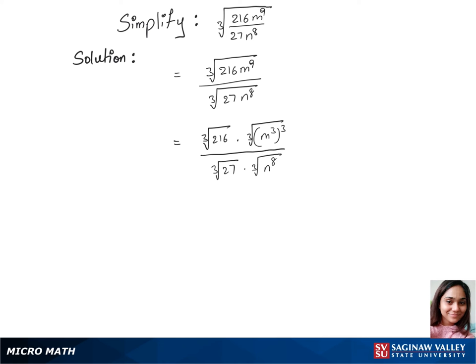We did the same here. In our next step, we have cubic root of, we can write 216 as 6 cubed times, we'll cross out cube and cubic root here, and we have m cubed over, we have cubic root of, we can write 27 as 3 cubed times cubic root of n to the power 8.